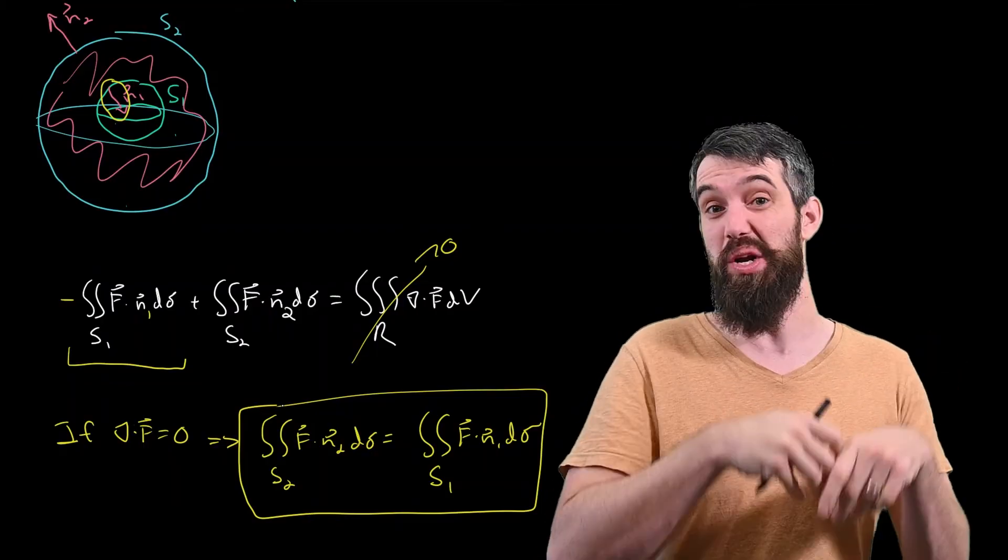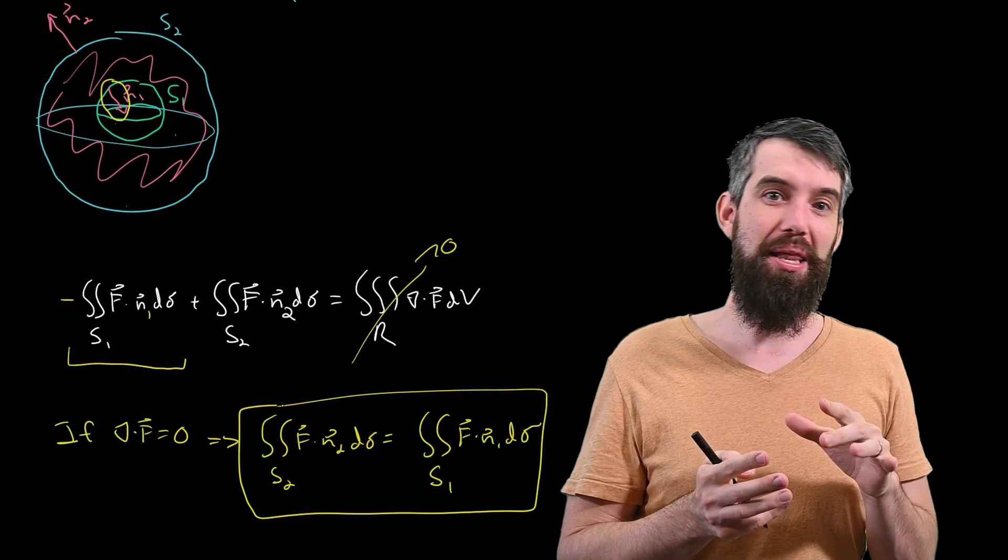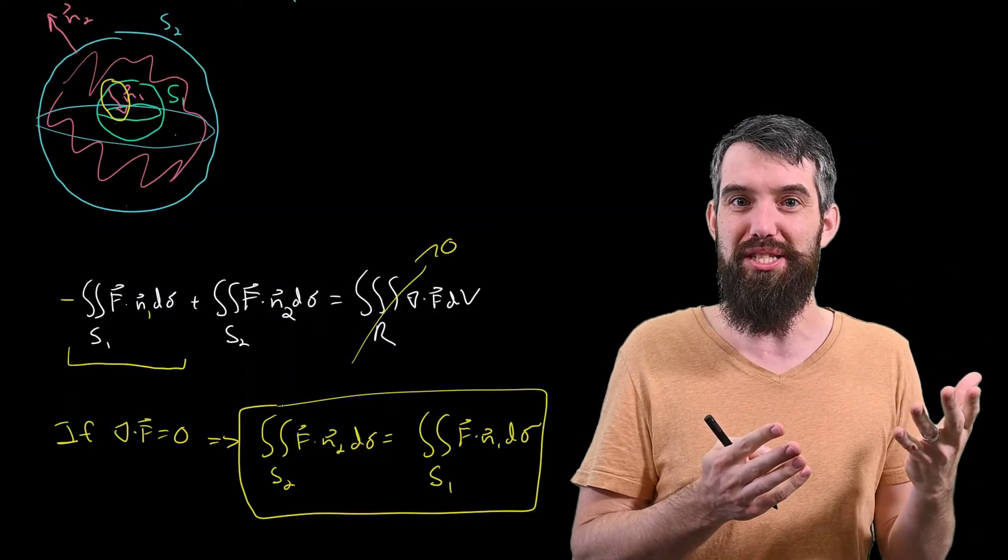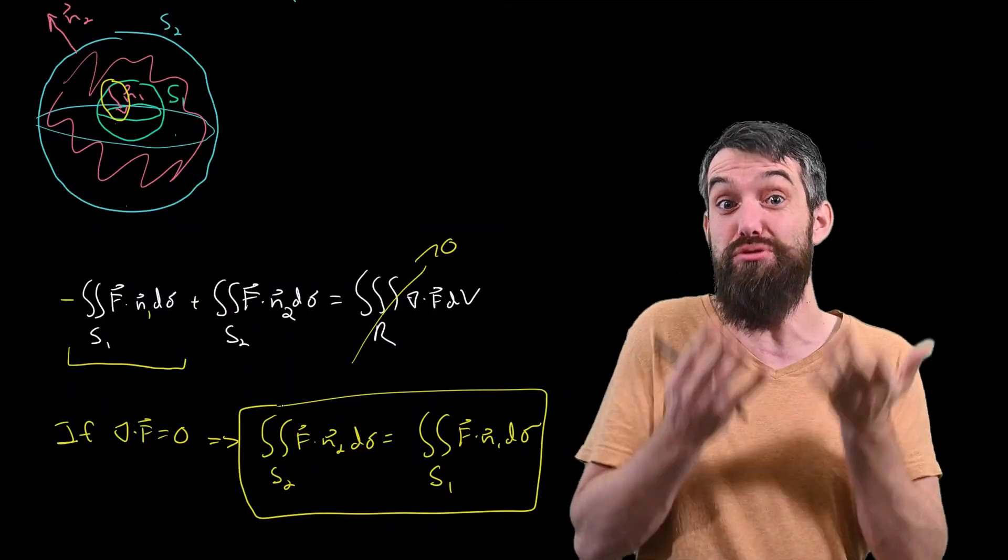Say your S2 is really big and messy and gnarly, and you didn't want to deal with it. Well, if the divergence is zero, the flux across that messy surface could be just the flux across some simple surface that you do know how to compute.